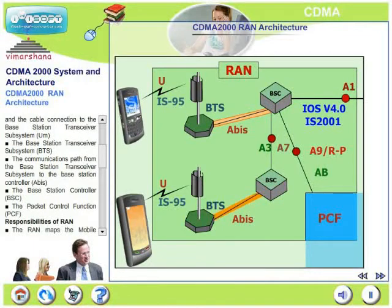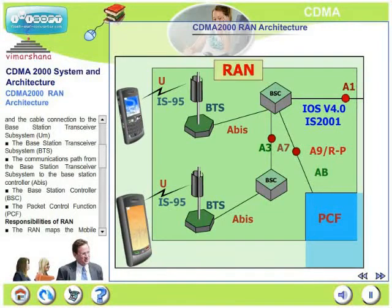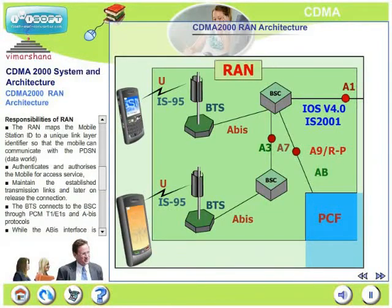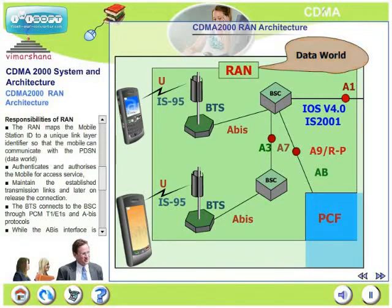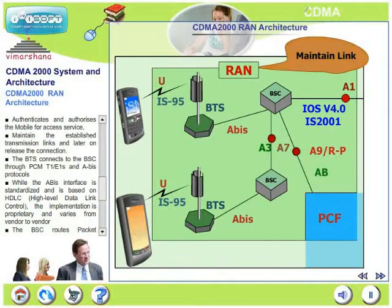The communication path between BTS and BSC is called the ABC interface. From the cell side tower to the base station, the interface is called UEM. The RAN maps the mobile to a unique link layer identifier so that the mobile can communicate with the PDSN, which is the data world. It authenticates and authorizes the mobile for access service and maintains established transmission links, later releasing the connections. It also manages the radio resources.